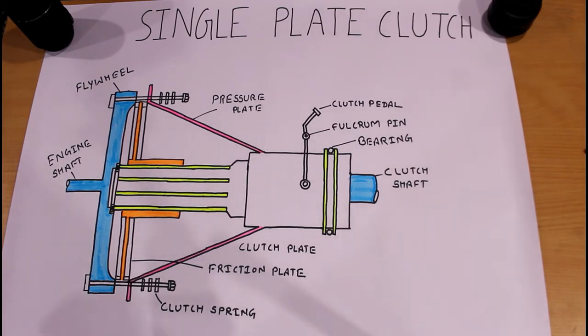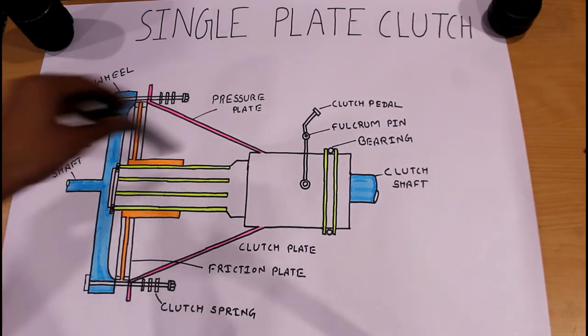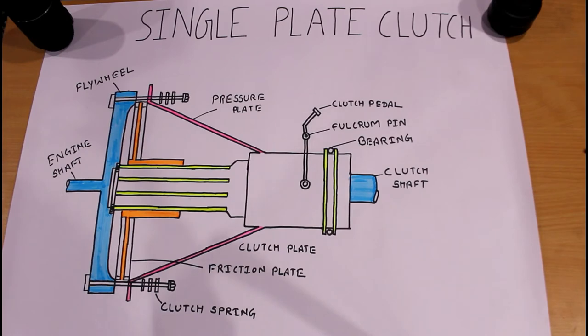Let's see how this single plate clutch works. There will be two conditions possible: first one is the engaged position and second one is the disengaged position. Our clutches are always in an engaged position. That's why engine power is transmitted to the gearbox. We just have to disengage our clutch plate in order to change the gears.